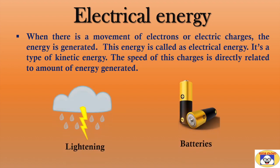Nature's best example of electrical energy is lightning. It occurred due to the development of a large electrostatic field between clouds. Another example is battery. In various home devices, batteries are used which convert chemical energy into electrical energy. Additionally, electrical energy is used in computers, electronics, machinery and many other utilizations.